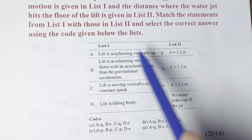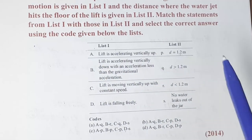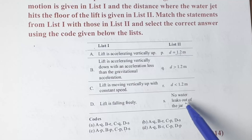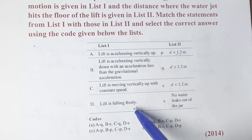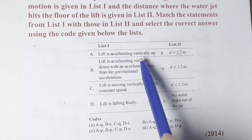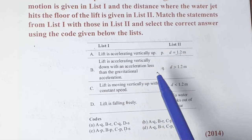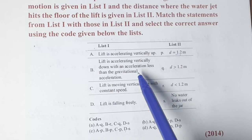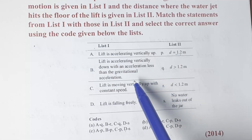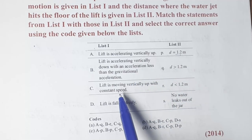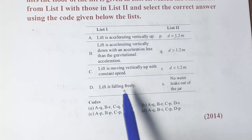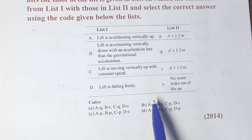In list two, the distances are given with respect to d, that is 1.2 meters — equal to, greater than, less than, and no water leaks out. The four options in list one are: lift accelerating upward, lift accelerating vertically downward with acceleration less than gravitational acceleration, lift moving up with constant speed, and lift in free fall.